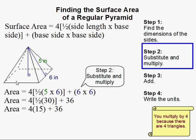And then we have our base. In this case, our base is a square. So that's just six times six, because six times six. The area of a square is side times side.